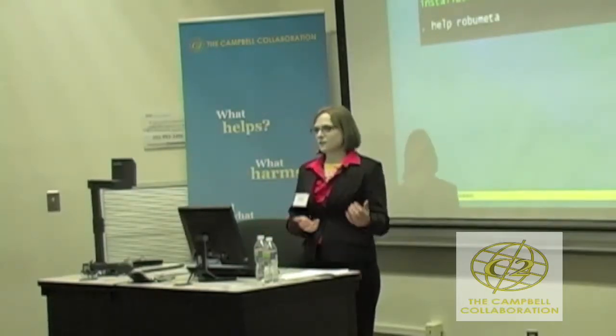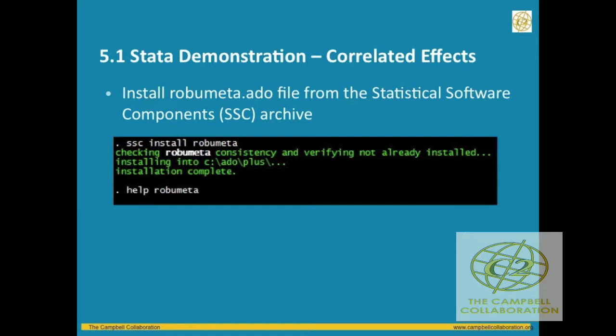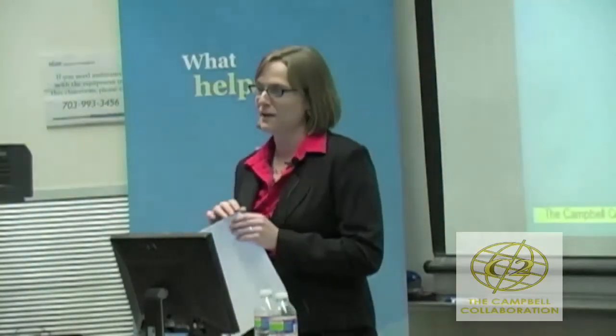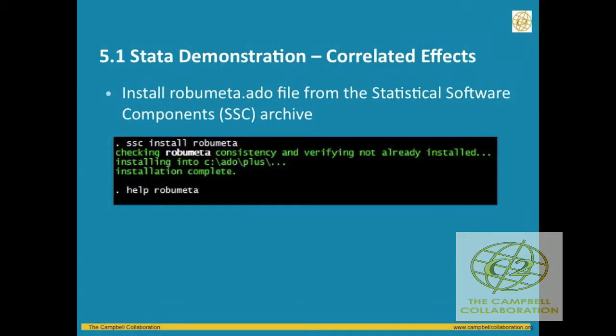Once you've coded your data and have multiple effect sizes per study and are using Stata, you'll want to install the ado file from the SSC archive. For Stata users, you would just type 'ssc install robumeta' — robumeta is the name of the command. After downloading it, you can type 'help robumeta' to pull up the help file. I always recommend reading the help file before using a new function. The first couple of pages of your handout include a copy of that help file.